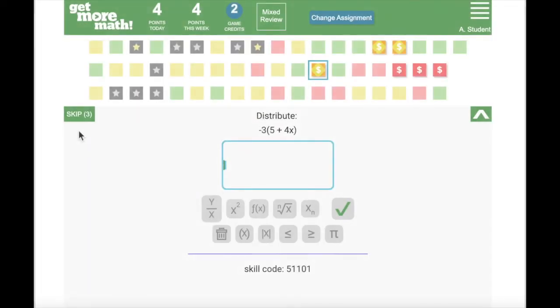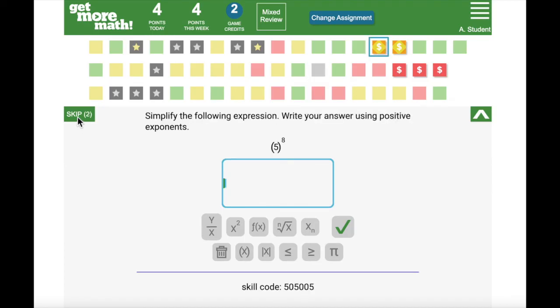If your teacher is not online, Get More Math allows you to skip a limited number of problems when you're working in mixed review. Get More Math will change the color of your skip skills to gray. It may be helpful to either write down or take a screenshot of the problem that you are stuck on so that you can get help when your teacher is available.